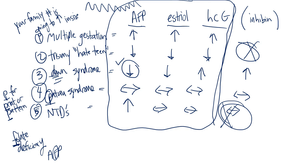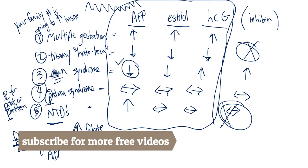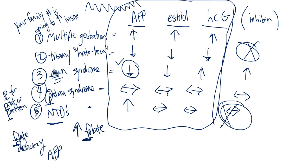For neural tube defects, remember folate deficiency causes these. You want the mother to take lots of folate. Remember the letter F in fetoprotein part of alpha fetoprotein. That's increased but everything else stays the same.